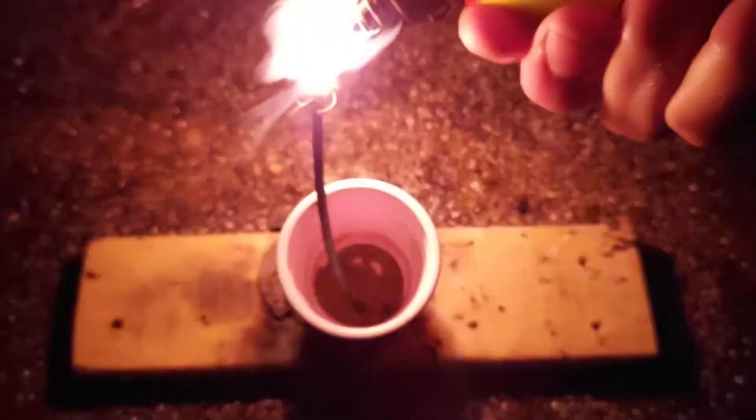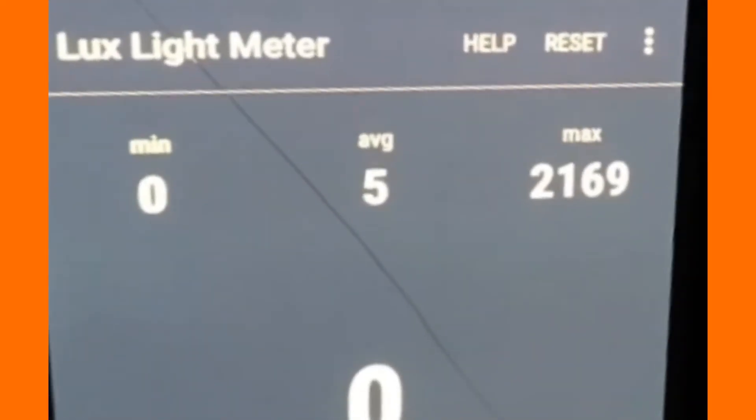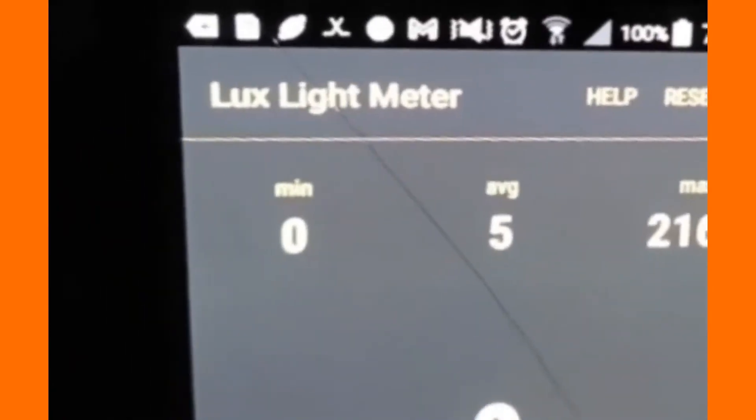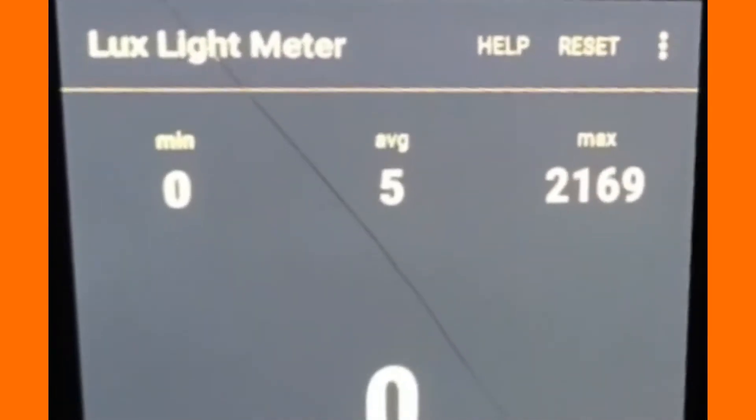Our next mix is potassium permanganate magnesium and sulfur. I figured that one would be good. Potassium permanganate magnesium and sulfur gave a reading of 2169 lux.